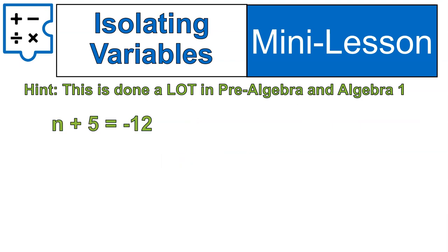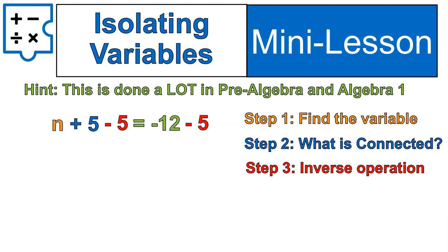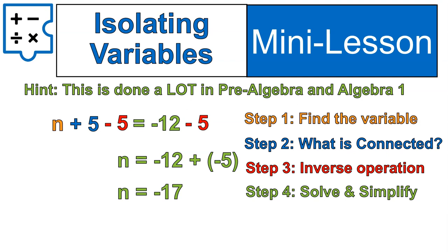Let's do some practice. n plus 5 is equal to negative 12. We're going to go through the steps. Find the variable n. What's connected to it? Plus 5. I'm going to do the inverse, which is minus 5. So notice the plus 5 minus 5 will give you zero. And you'll just have n by itself. But I have to do minus 5 to both sides of that equation. So I end up with n is equal to negative 12 minus 5 or negative 12 plus negative 5. I like writing it this way. You could leave it as negative 12 minus 5 if you prefer. Totally up to you. But I'm going to go ahead and add those numbers together for n is equal to negative 17.